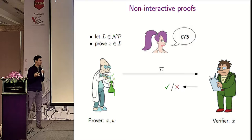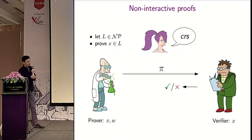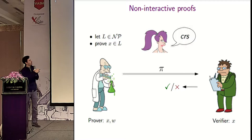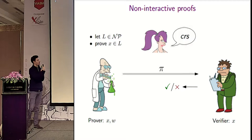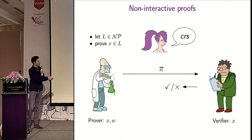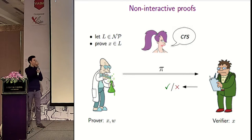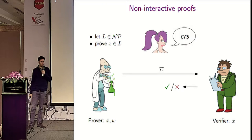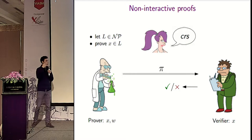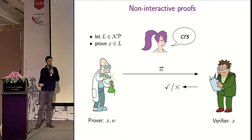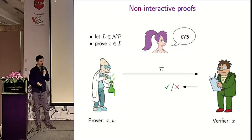We consider non-interactive proofs. Suppose we have a language L and we want to prove that some statement is in the language. There is a prover and a verifier; the prover has a witness W and uses it to compute a proof, which is sent to the verifier who either accepts or rejects. Both have access to a common reference string that has been set up in a trusted way.